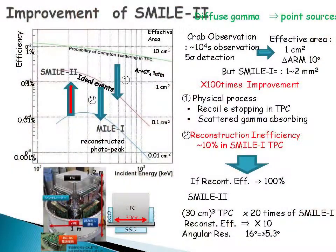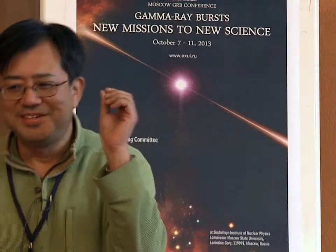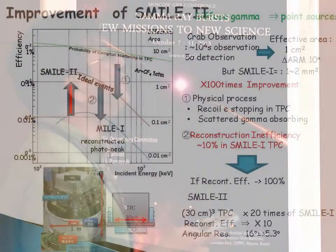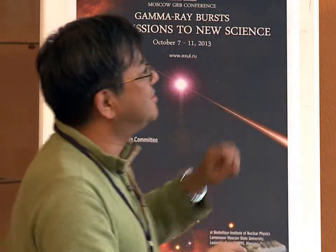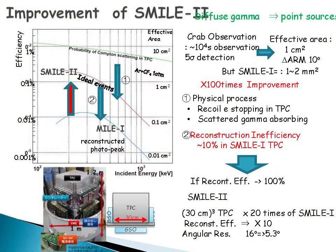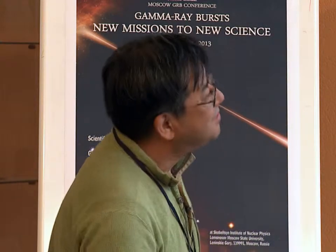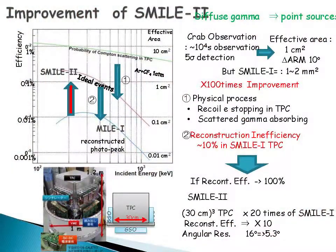SMILE-1 had an effective area of only 1–2 mm² — quite small — with an efficiency of 10⁻⁴. There are two reasons: one is the small volume, and the other is that tracking efficiency is quite low when we need 3-dimensional electron tracks. Therefore, we improved this part — now we can reconstruct 3D tracks, improving efficiency by 10 times.